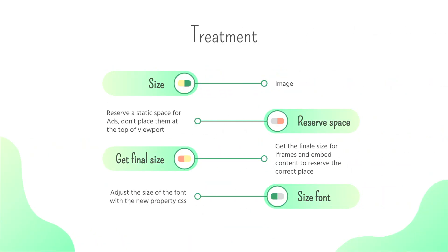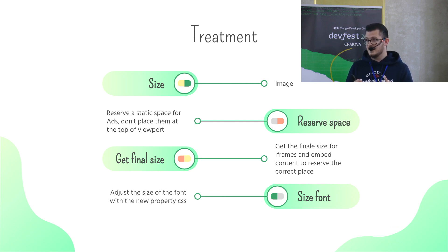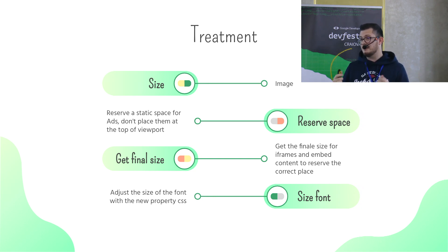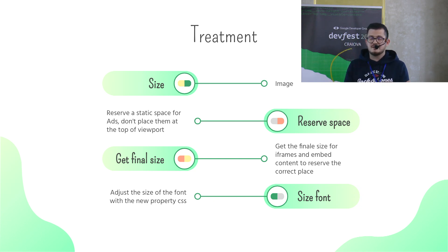Solving a CLS problem is quite simple — you just apply some rules. First, size your images and give them a correct size or correct ratio. For ads, embeds, and iframes, get the final size and reserve static space on your page with CSS. If ads, embeds, and iframes have a dynamic size, don't place them at the top of the viewport — place them on the right, bottom, or left, because when the element pops on screen it will cause the user to lose reading focus.